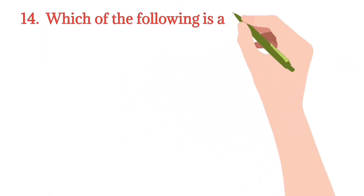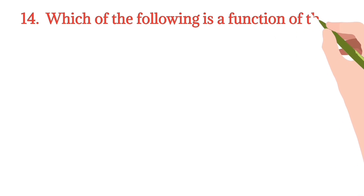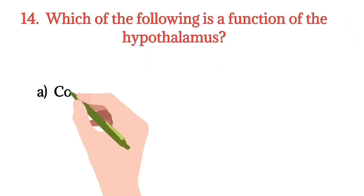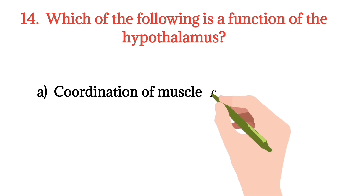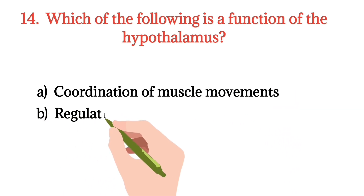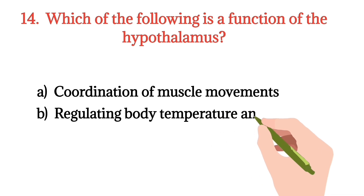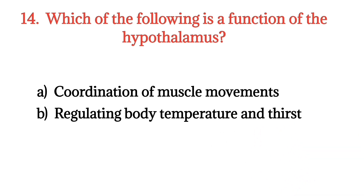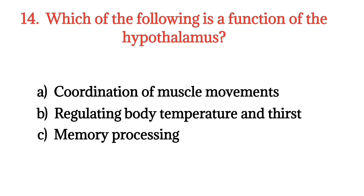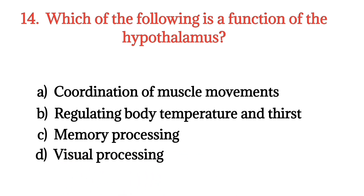MCQ number 14. Which of the following is a function of the hypothalamus? Option A: Coordination of muscle movements. Option B: Regulating body temperature and thirst. Option C: Memory processing. Option D: Visual processing. The right option is Option B.